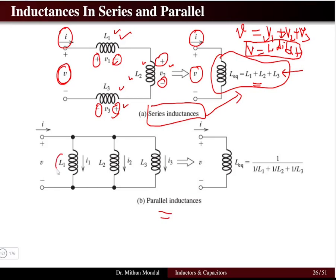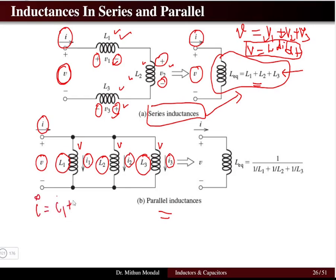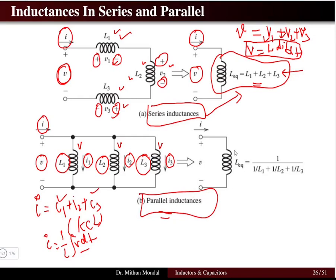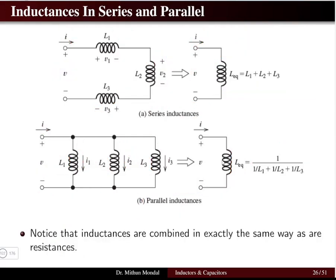For inductors in parallel, the supply voltage V remains constant across all inductors, and current distributes as i = i1 + i2 + i3 by KCL. Using i = (1/L) ∫v dt for each branch, the equivalent parallel inductance is 1/L_eq = 1/L1 + 1/L2 + 1/L3.